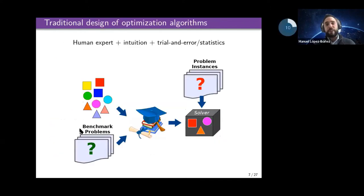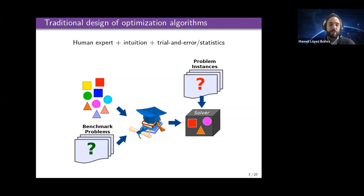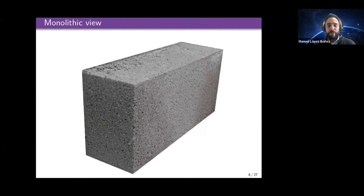Comparing this to the traditional design of MOEAs: in the traditional approach, an expert uses intuition and makes design choices — using trial and error and statistics — to decide on a solver. Hopefully the problem instances that arise in practice are similar to the ones the expert used when designing the algorithm. The solver then becomes a monolithic block with a label, published in a paper, that cannot change.